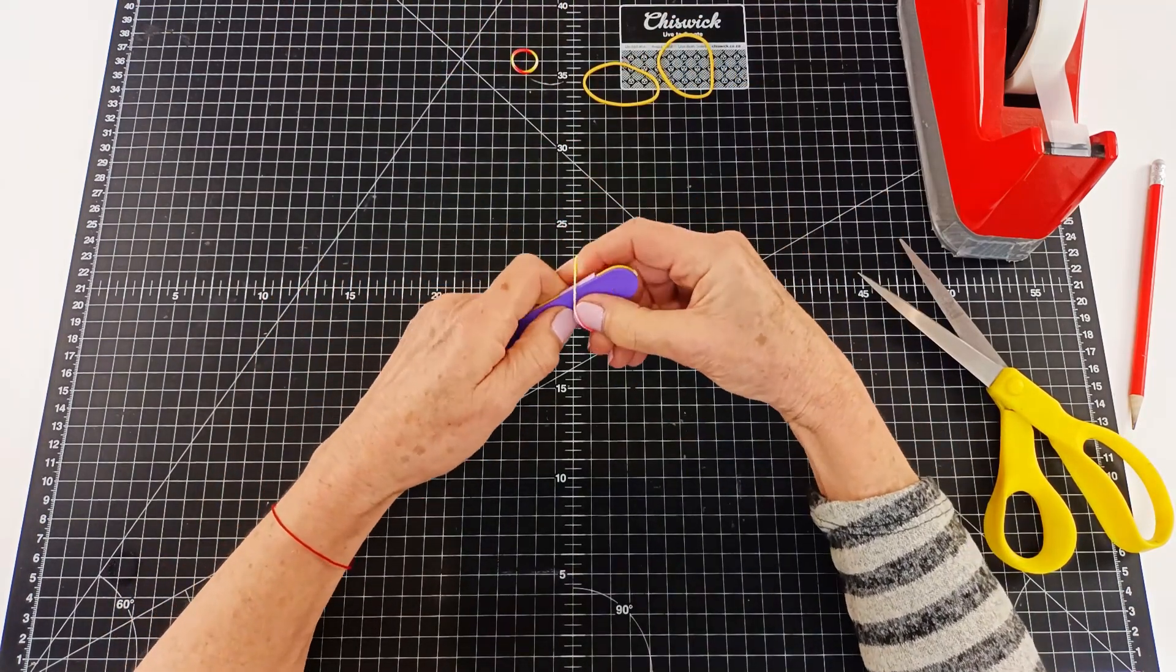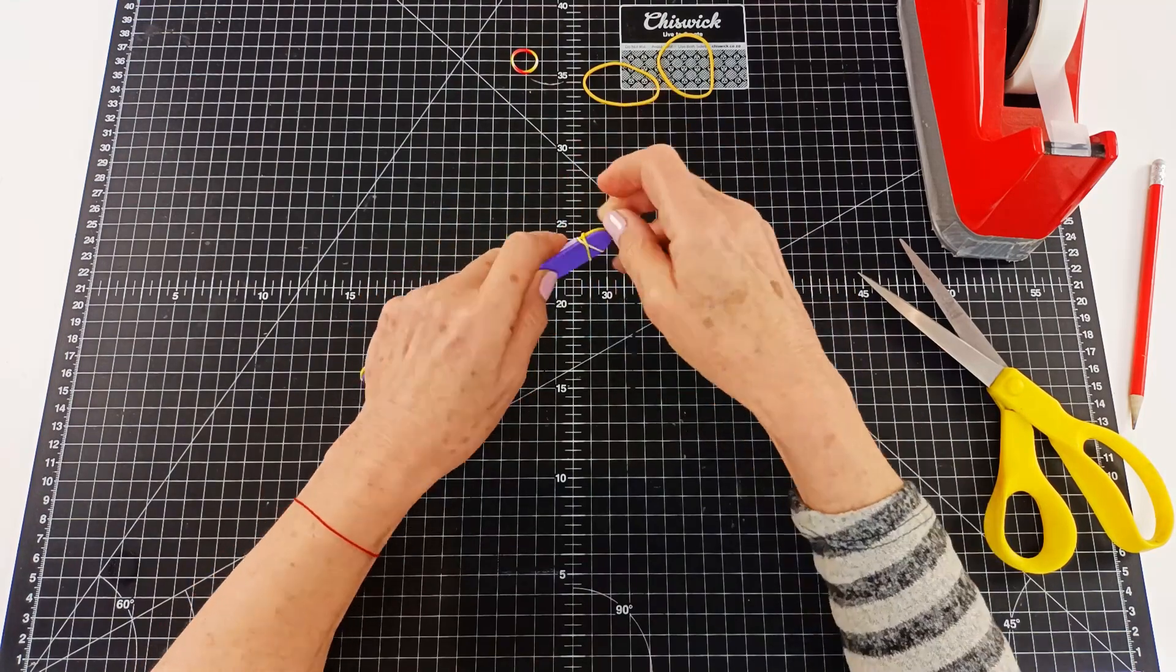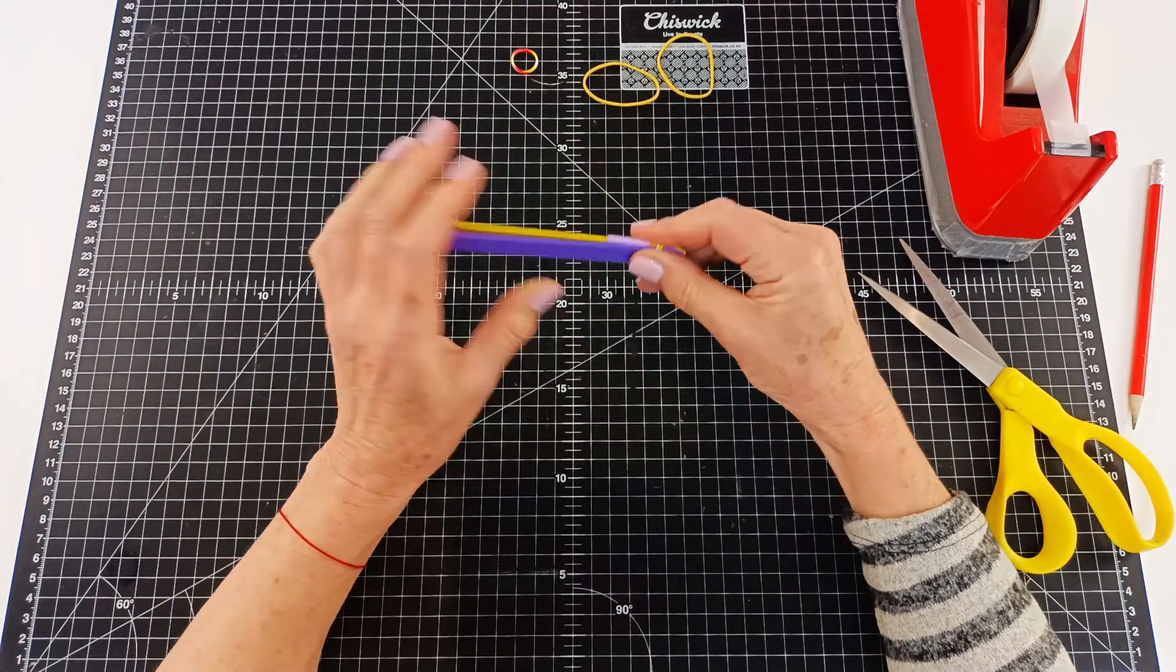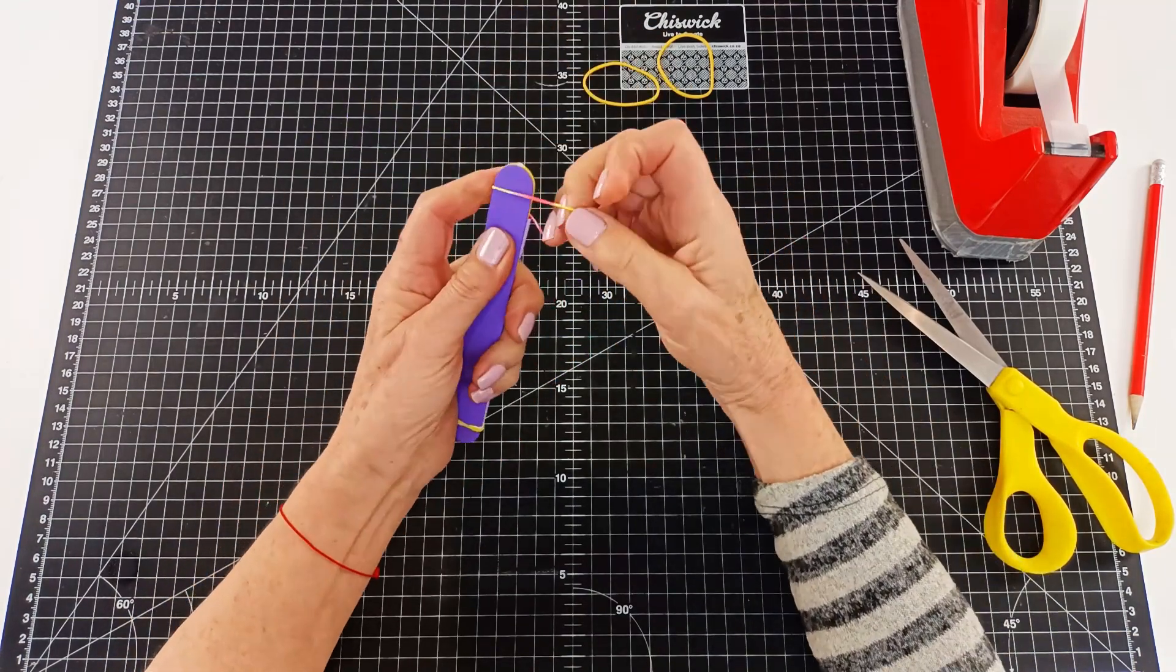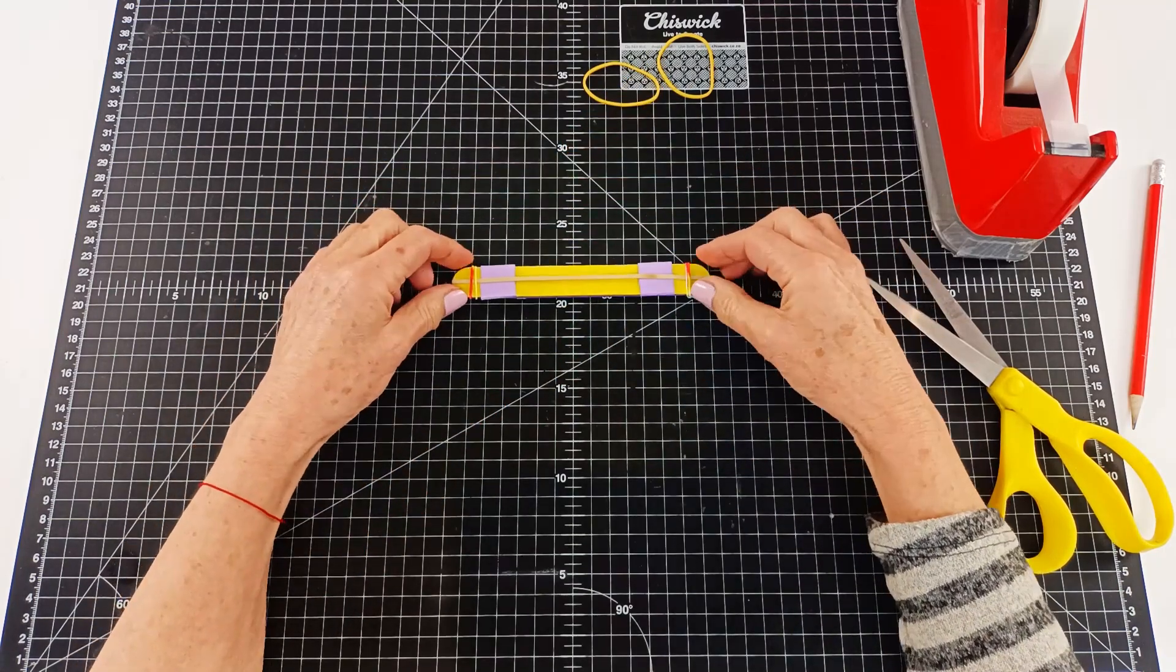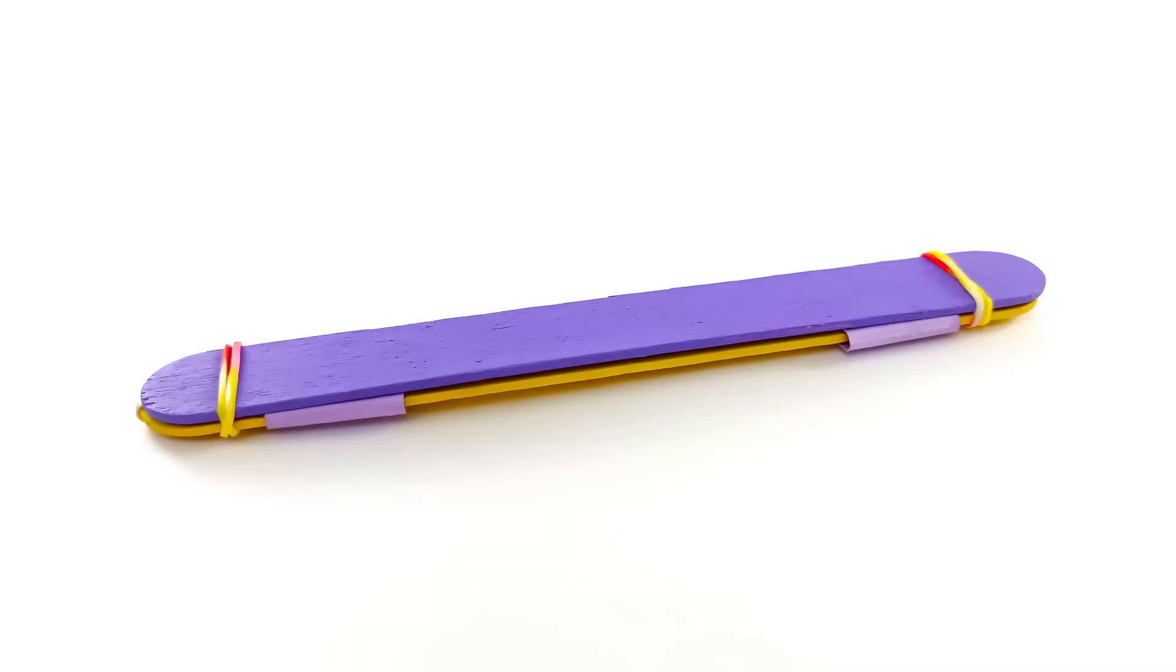Now we're going to use two smaller elastics. These are just loom elastics that we happen to have on hand. You can use whatever you have and we're going to put those around the end. And there we go. It's all finished.